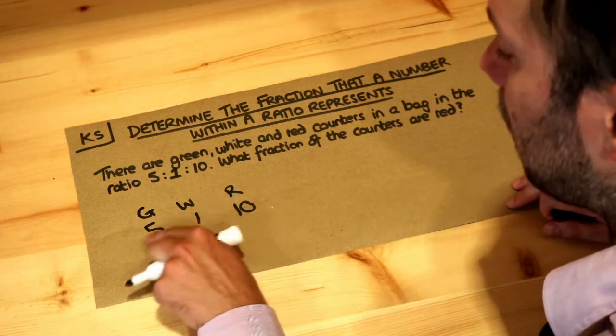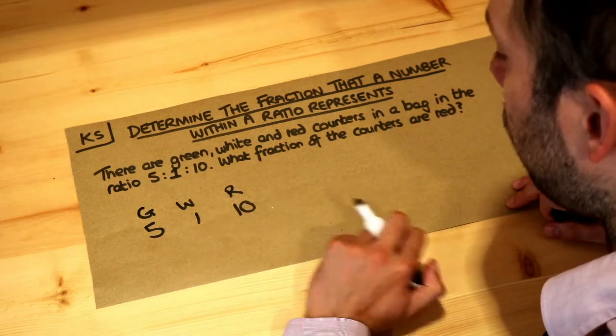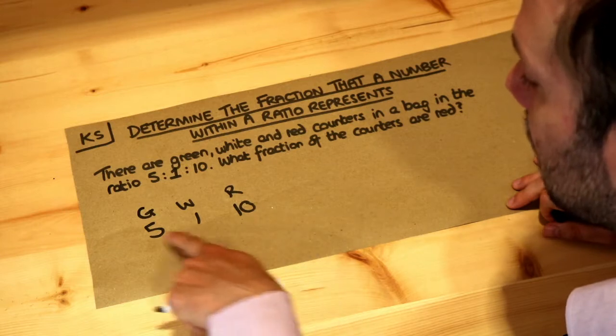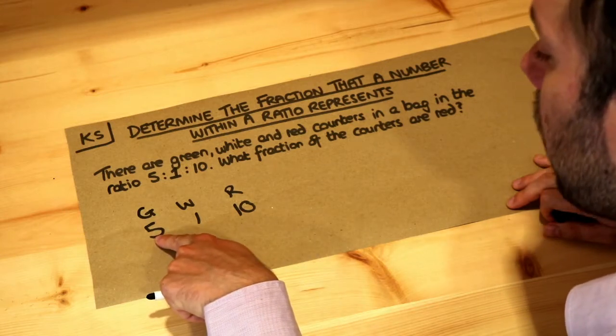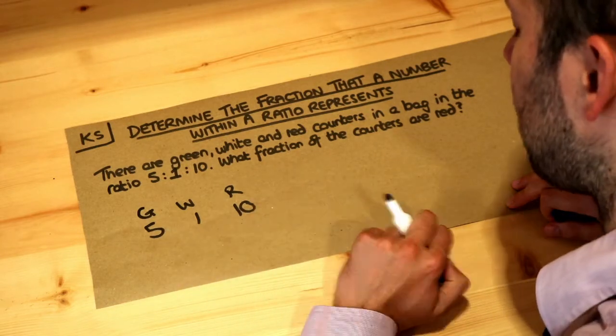Or there could be double as many — there could be 10 green, 2 white, or 20 red. But we'll keep it simple and just say there actually were 5 green, 1 white and 10 red.